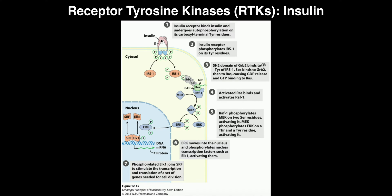This is a homodimer because both units are exactly the same. When the insulin receptor dimerizes, that's when it becomes activated — in fact, that's when any RTK becomes activated. They dimerize in the presence of the hormone or signaling molecule. When they dimerize, that's what induces autophosphorylation.